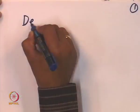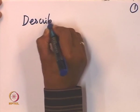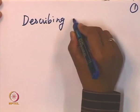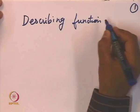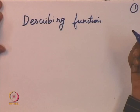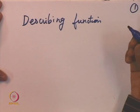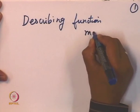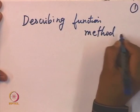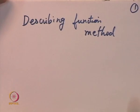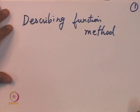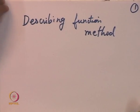Welcome everyone to this lecture. Today we will start with a new topic called describing functions. This technique has widely been used since perhaps the 1930s or 1940s. It is a method for finding out periodic orbits. It is an approximation method.